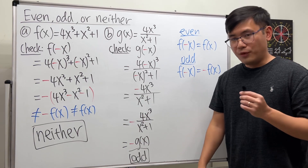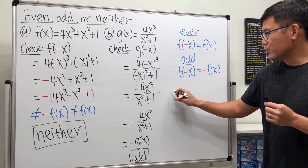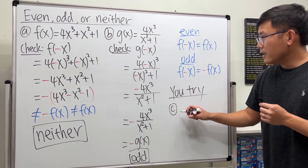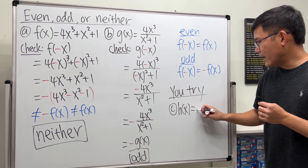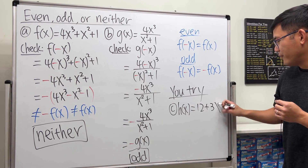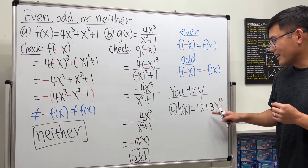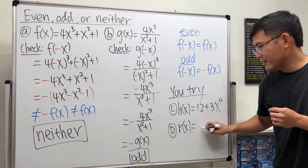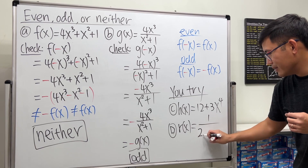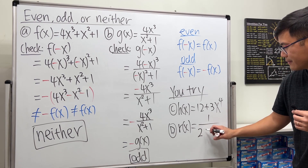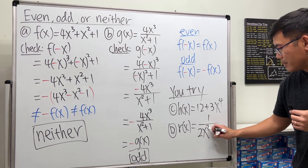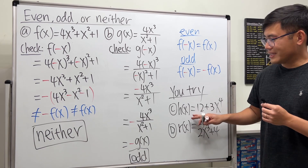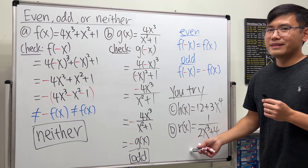Before we go, I have two practice questions for you. For c, let h of x equal x to the 12th power plus 3x to the 4th power. For d, let r of x equal x to the third power plus 4. Let me know in the comments: are these even, odd, or neither?